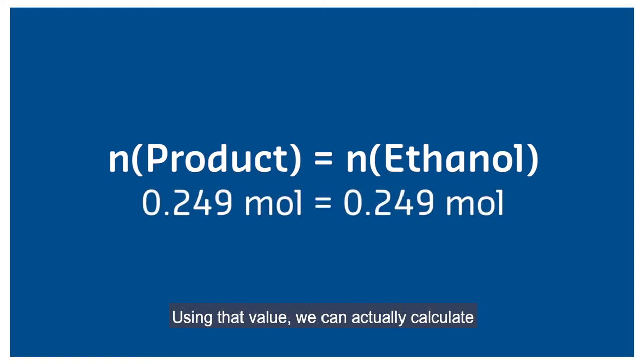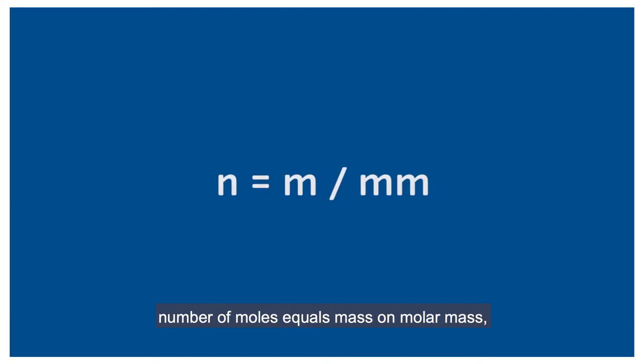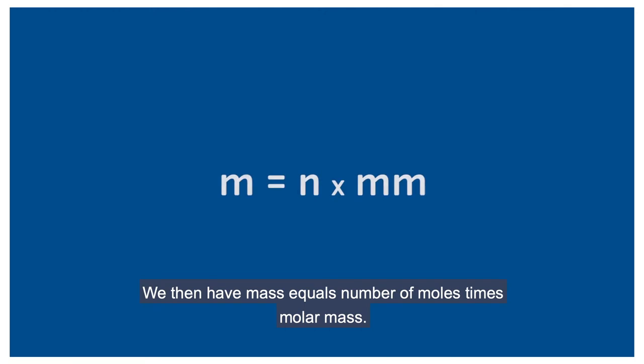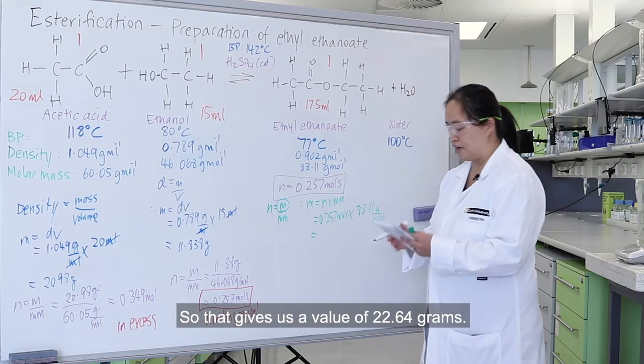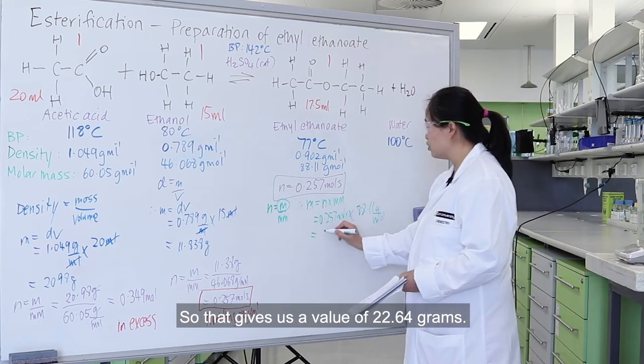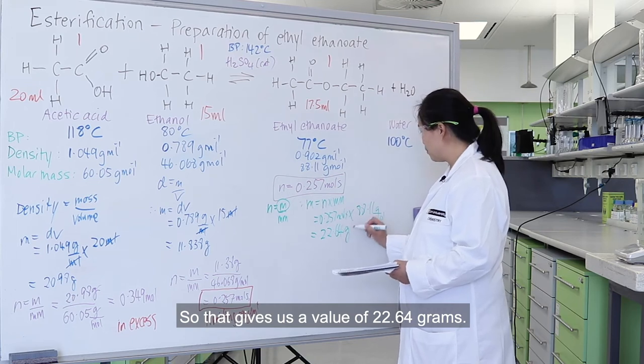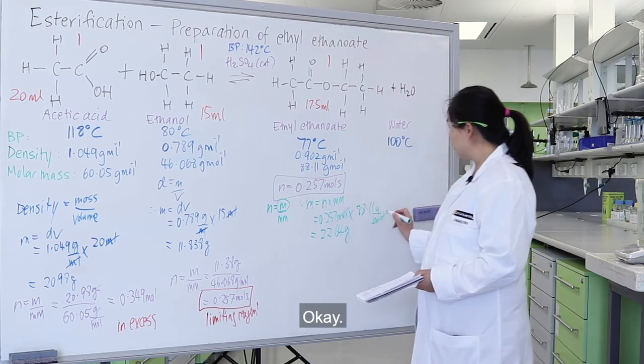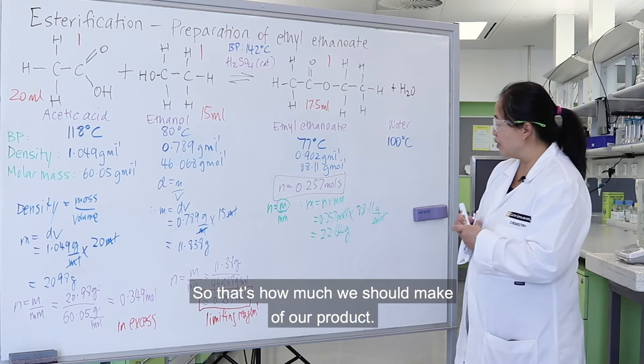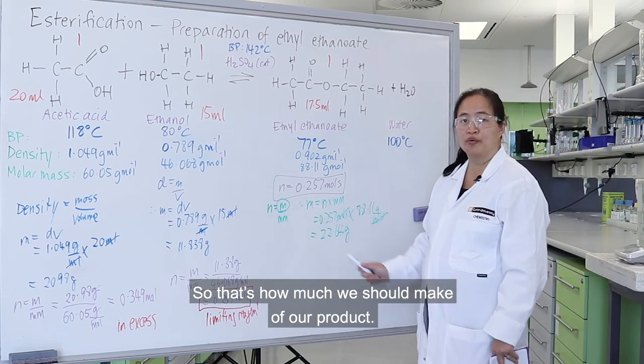Using that value, we can calculate our theoretical amount that we should make. To do that, we use the same equation, number of moles equals mass over molar mass, but we need to rearrange it. We have mass equals number of moles times molar mass. That gives us 22.64 grams. That's how much we should make of our product.